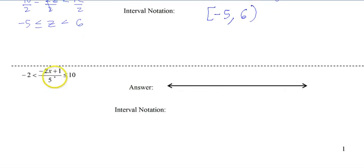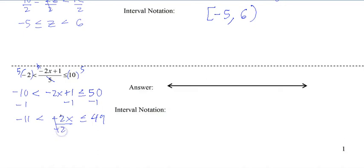One more to do. So same rule applies. This is 5. So if we were to cover 1, you still have to multiply by 5. So we multiply all three parts by 5. So that's negative 10, cancel the 5 in the middle, it gives us a 50. And then subtract 1. That's 49. Divide by negative 2.